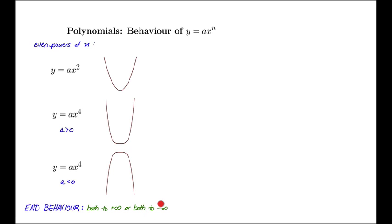What happens with odd powers? Let's explore odd powers of n. Let's start by looking at y equals ax cubed. Again, a positive. So we note here that we travel from minus infinity up to positive infinity for ax cubed.